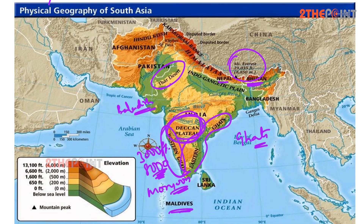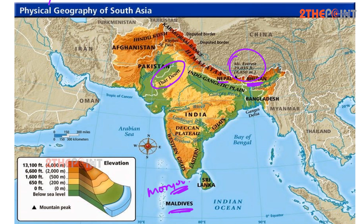The Deccan Plateau lies between the Eastern and Western Ghats. The Central Indian Plateau and the Chota Nagpur Plateau are located in the central parts of India, north of the two Ghat ranges. The monsoon rains ensure that an average of about 52 inches of rain per year falls on the Chota Nagpur Plateau, which has a tiger reserve and is also a refuge for Asian elephants.